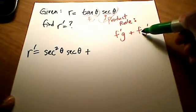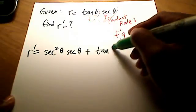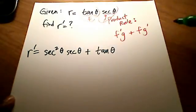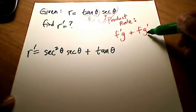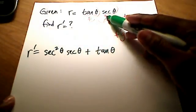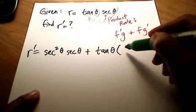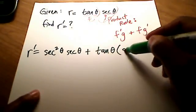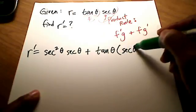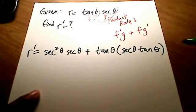Plus, give me the f function, which in our case is just tangent of theta, times g prime. And g prime in our case is the derivative of secant, and the derivative of secant is secant itself times tangent of theta.